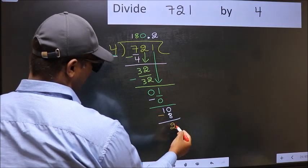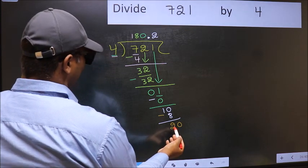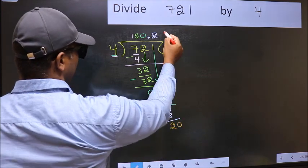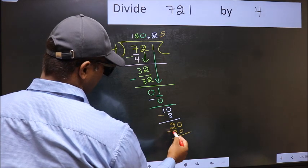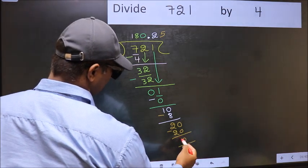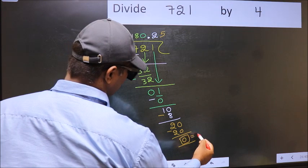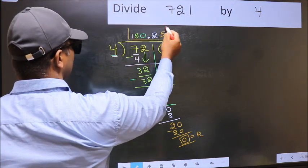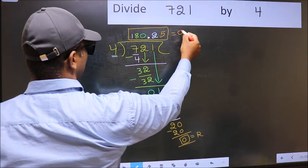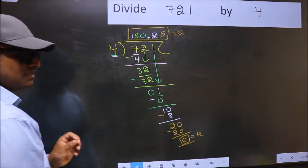We already have decimal, so directly take zero. When do we get 20 in the 4 table? 4 times 5 equals 20. Now you subtract, you get 0. This is our remainder, and this is our quotient.